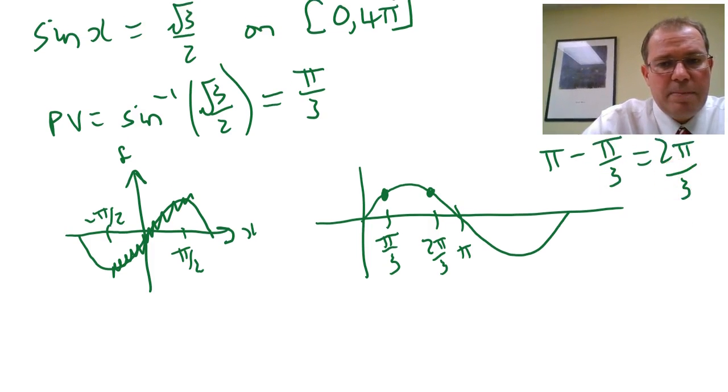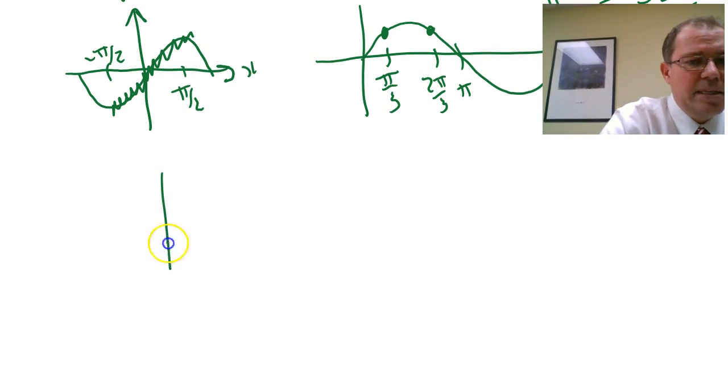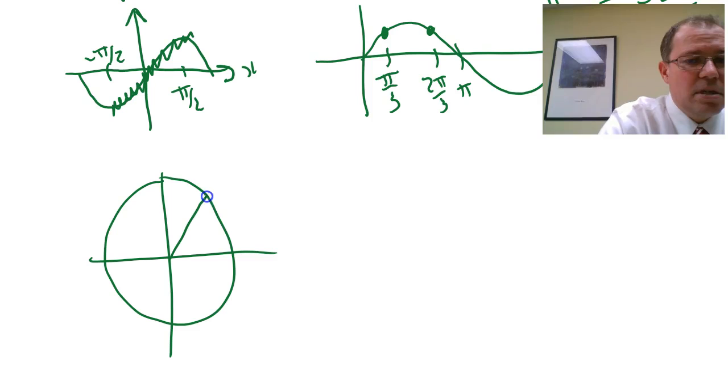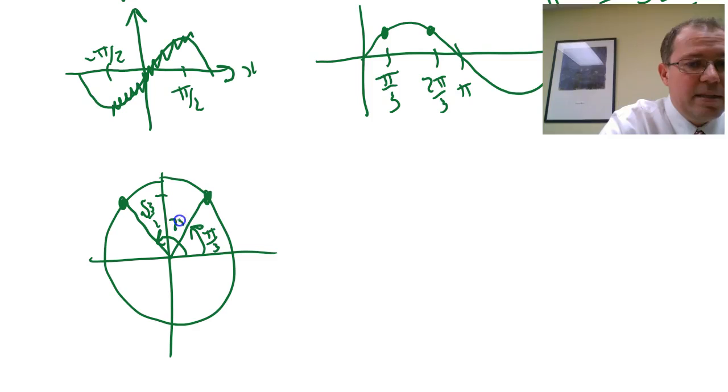You can also think about that on the unit circle. Here's our principal value—remember sine is the height on the unit circle—so I've got a height there of root 3 over 2, there's our principal value at π over 3, and clearly the other place we have a height of root 3 over 2 is at 2π over 3 right there.